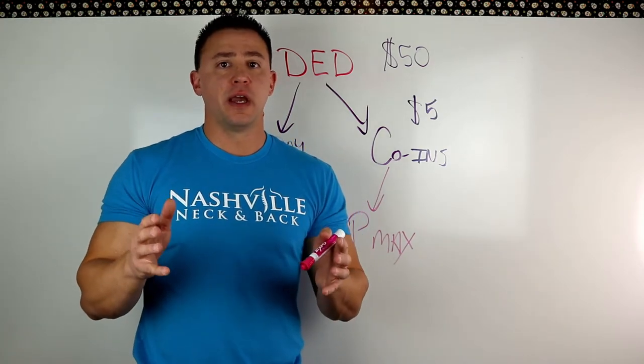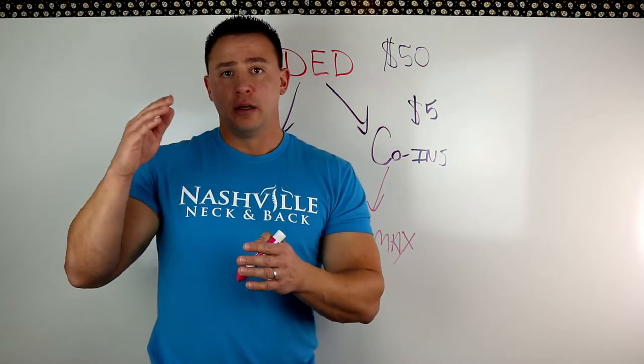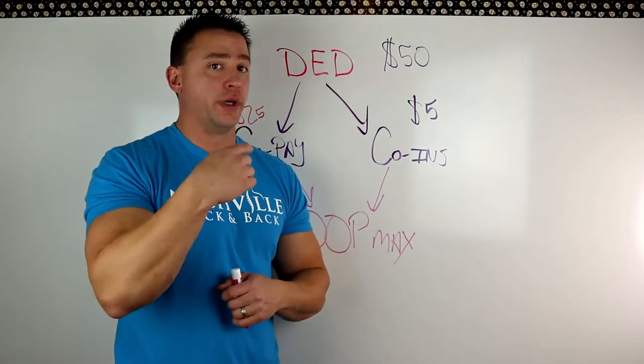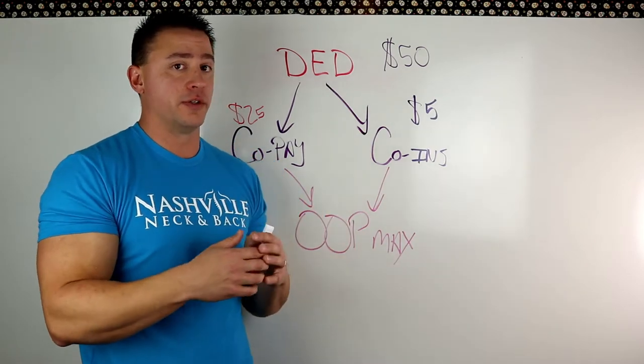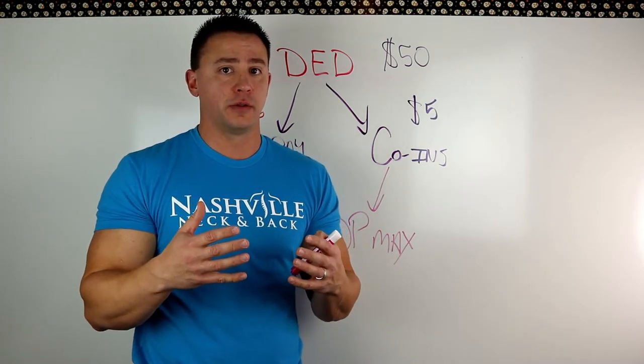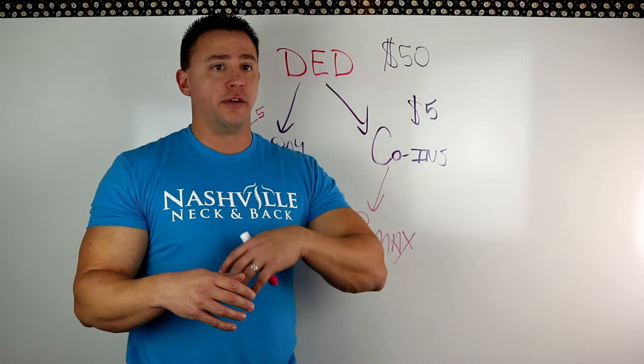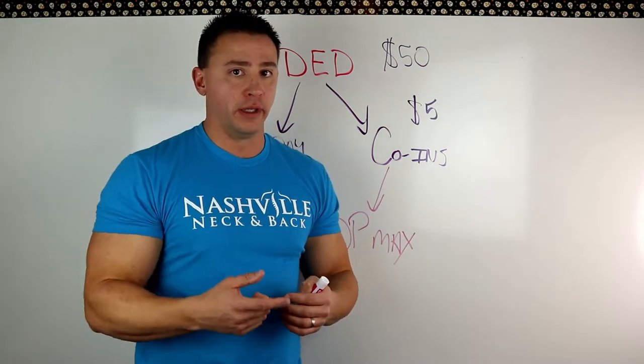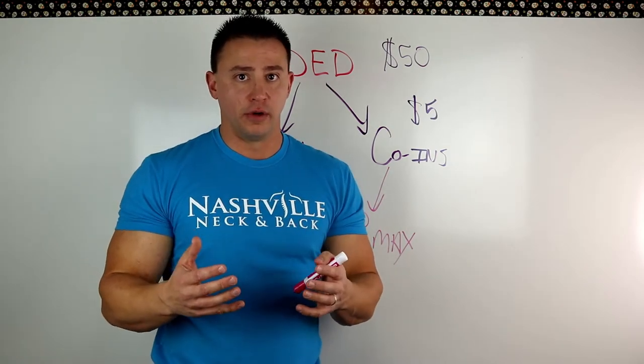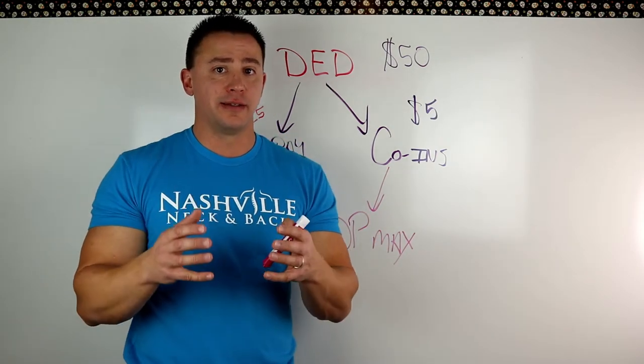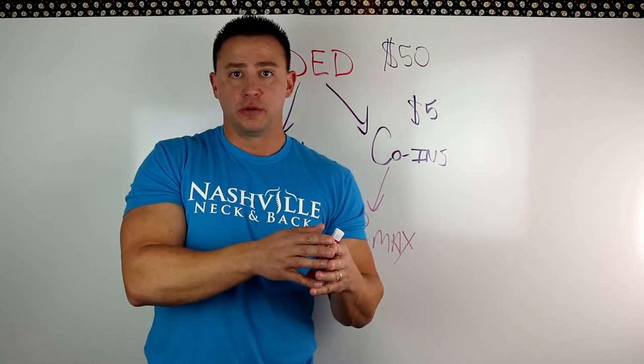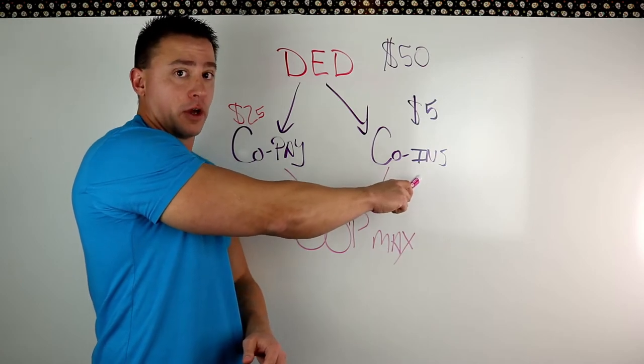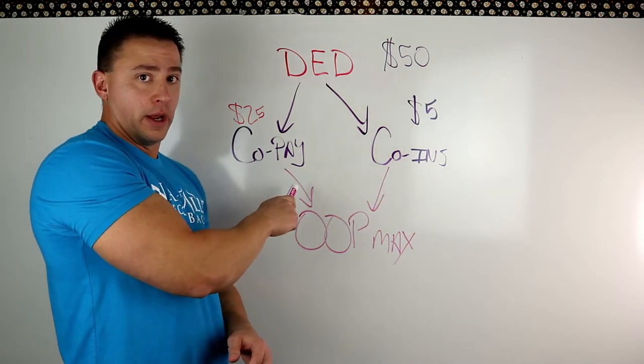Now, most deductibles reset on a calendar year, meaning December 31st rolls around, your deductible is going to be done, and January 1st, it's going to reset. So let's say, for example, our original example of $3,000 deductible, if you've met that or you've gotten halfway or if you've not even touched it on January 1st, it's going to completely reset and you've got to start all over. So you definitely want to make sure, like I said, if you have met your deductible, you take advantage of not paying the full amount, but instead you pay the coinsurance or the copay.